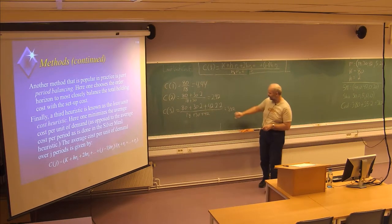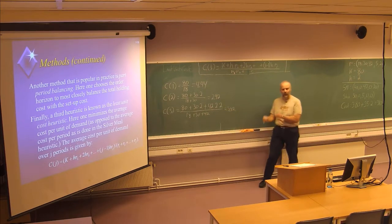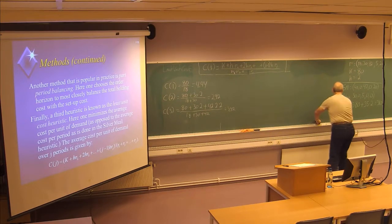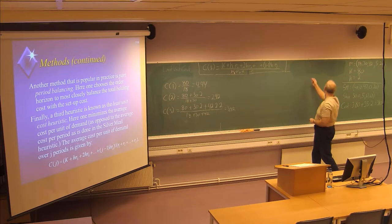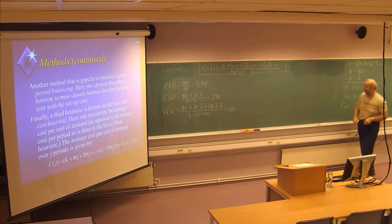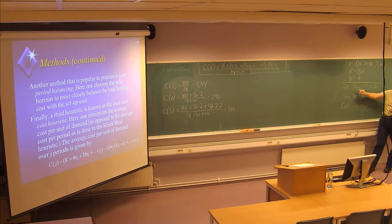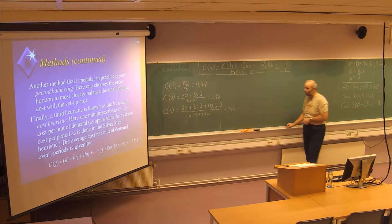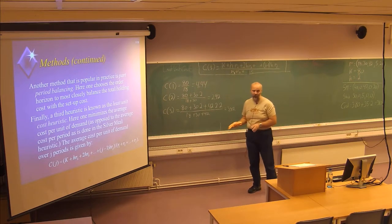Which means here C(2) is the best solution if we are using this technique and looking from period number one. So let's now define the least unit cost solution. Similar to the silver meal solution, we are producing for two periods — 48 items — and nothing in the next period.